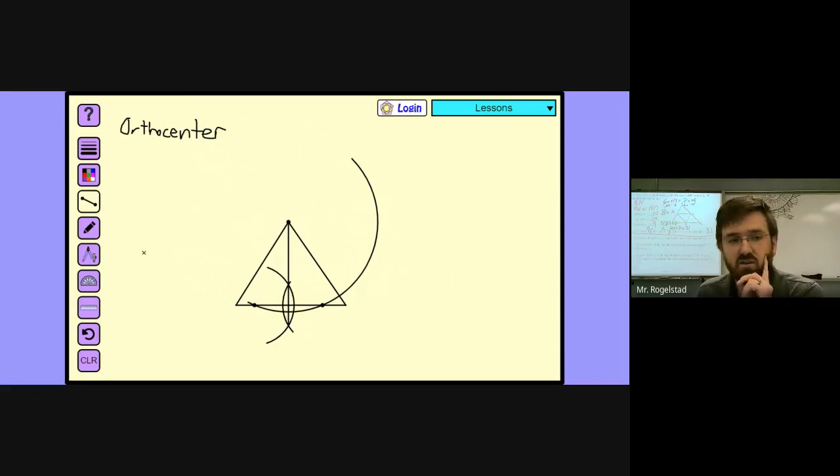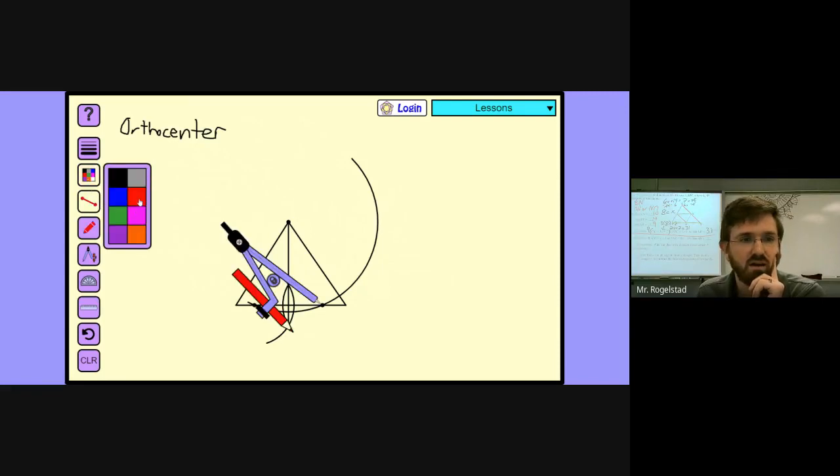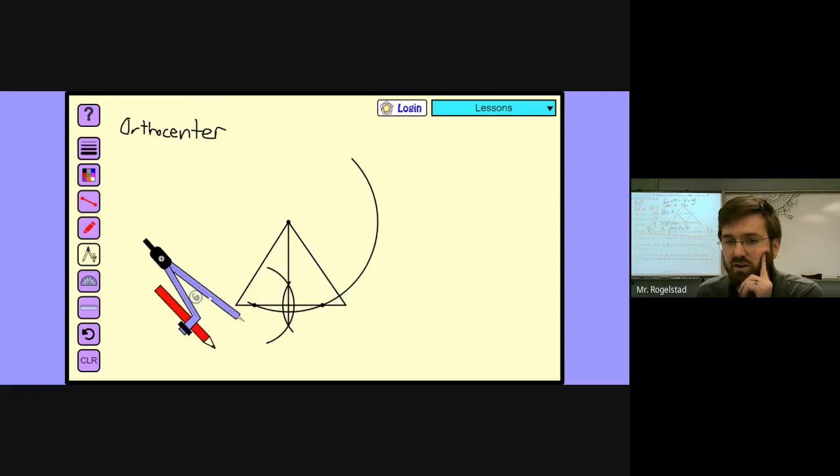The other altitude I'm going to do next. I'll choose a different color just so it's easier to tell. Unlock my compass and choose one of the other two vertices.